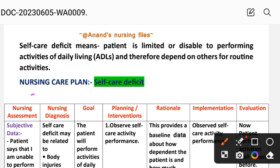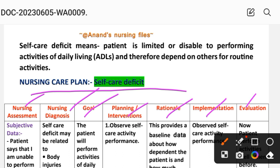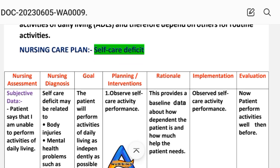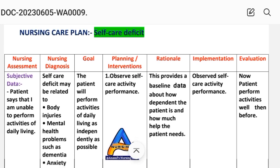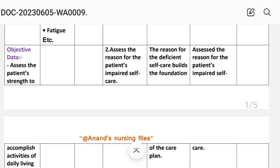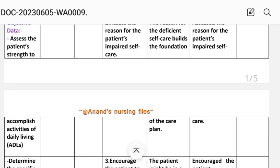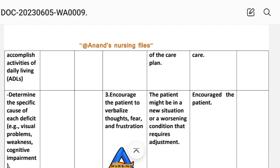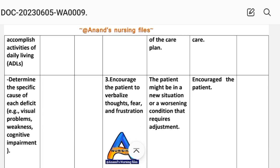The self-care deficit nursing care process includes the following steps: nursing assessment, diagnosis, goal, planning, intervention, rationale, implementation, and evaluation. For nursing assessment, subjective data includes the patient saying they are unable to perform activities of daily living. Objective data includes assessing the patient's strength to accomplish activities of daily living and determining the specific cause of each deficit, such as visual problems, weakness, or cognitive impairment.